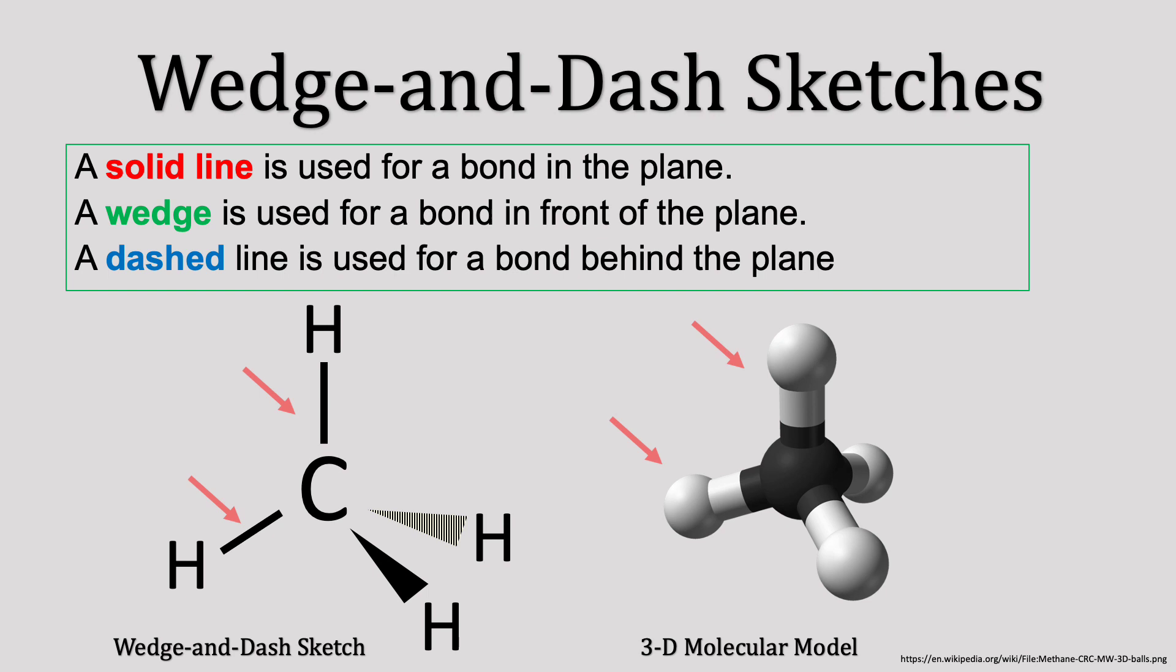First, solid lines represent bonds in the plane. These bonds, or atoms, are neither going towards you or away from you. They are flat on your screen.